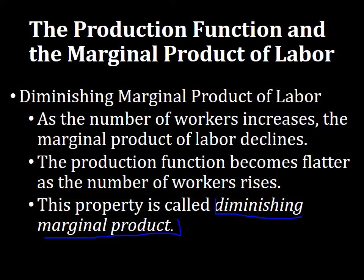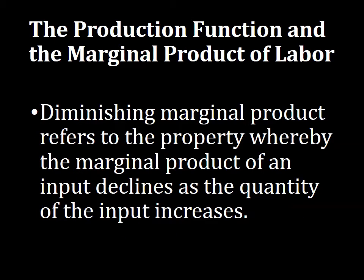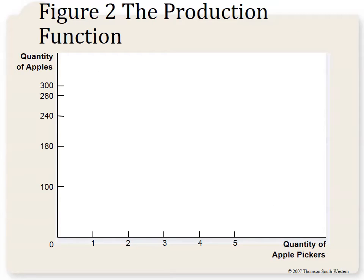All factors of production — land, labor, and capital — eventually experience diminishing marginal product, or diminishing marginal returns. As we increase the number of inputs into producing a good or service, we get less and less additional output from that good or service.